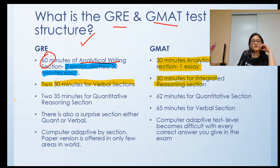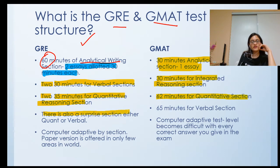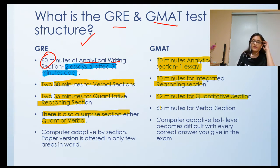In GRE, there are two 35-minute quantitative reasoning sections, and in GMAT, a 62-minute quantitative section. In GRE, there is also a surprise section — either verbal or quant — that could be 30 or 35 minutes depending on what section it is. In GMAT, there is a 65-minute verbal section.